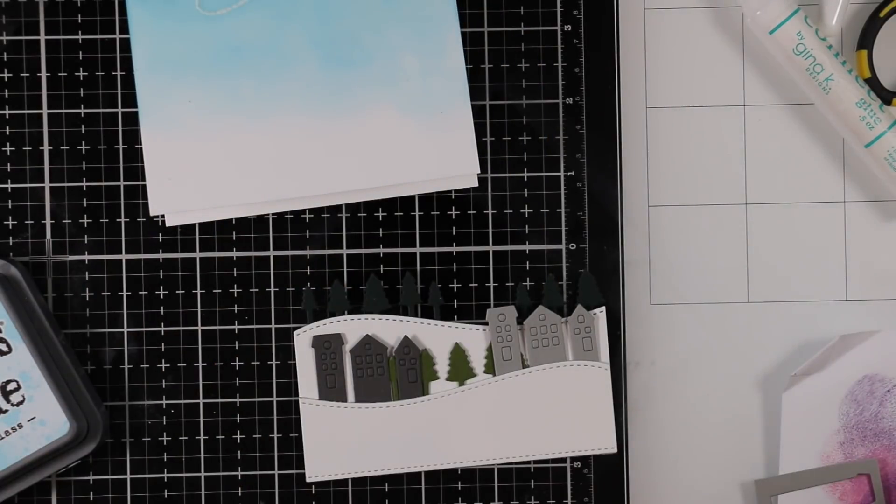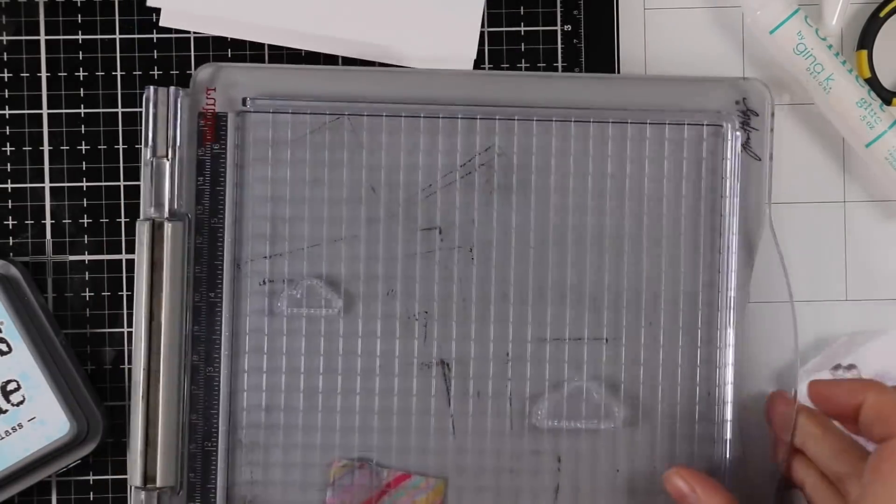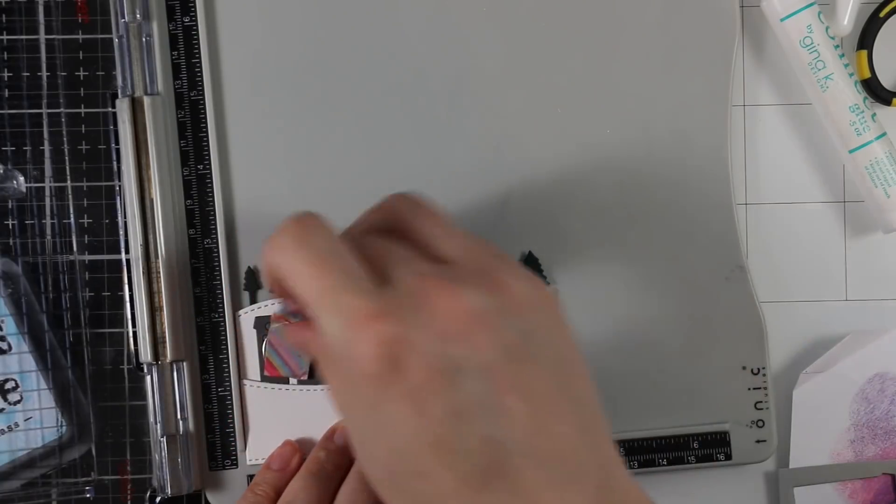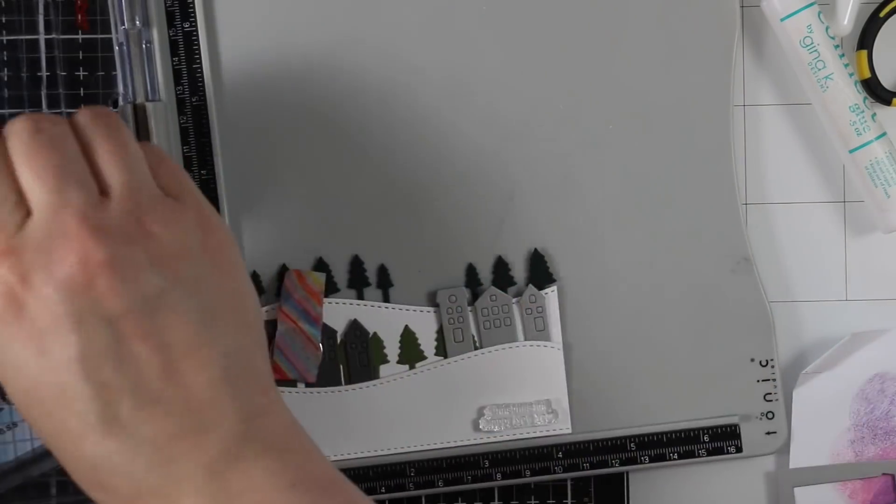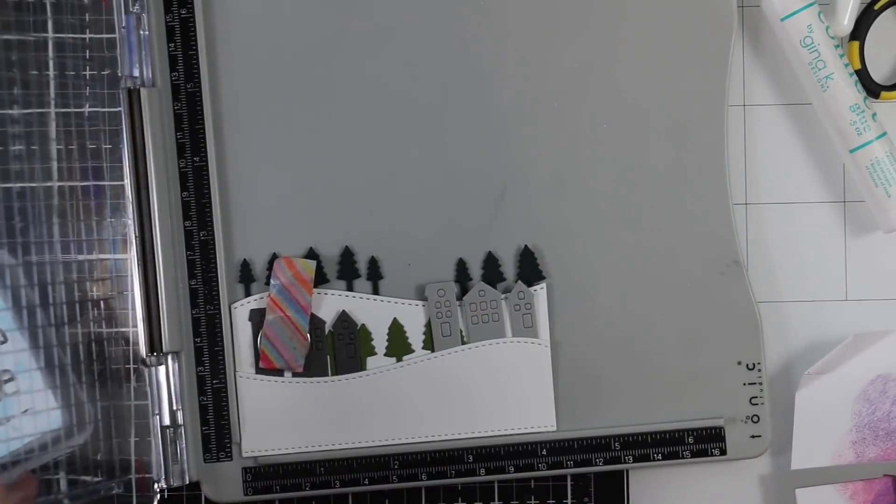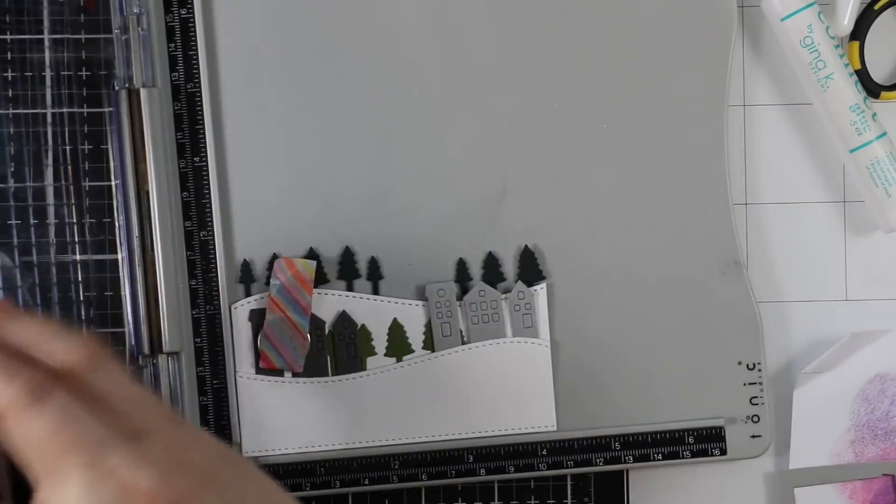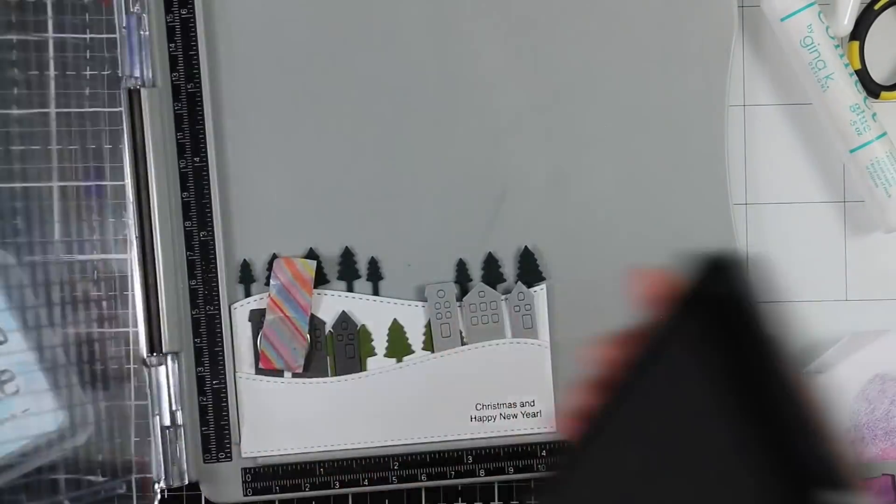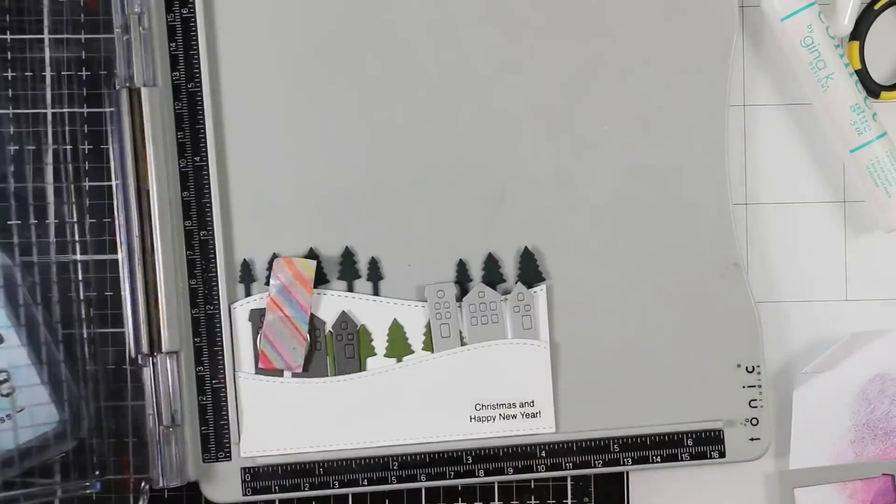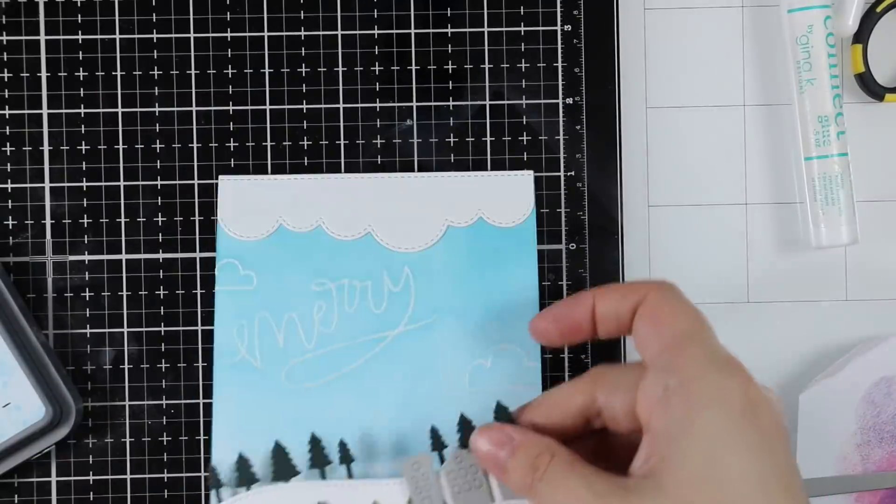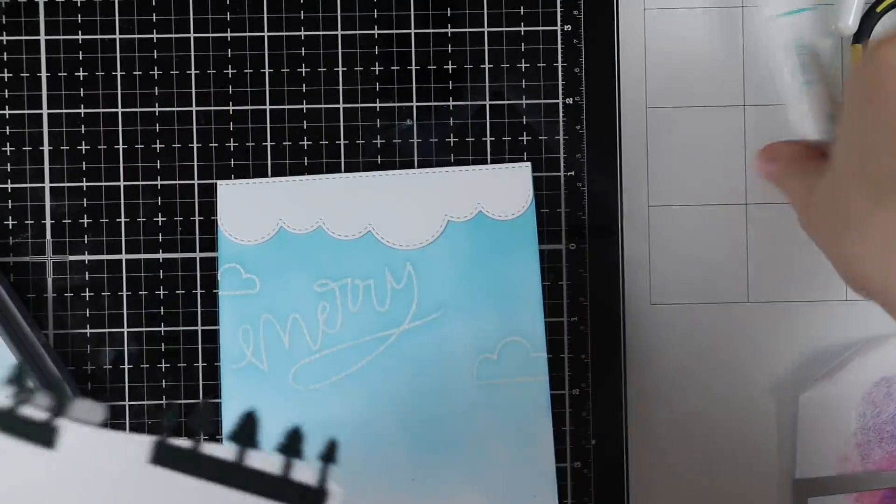Before I adhere this piece to my card front, I wanted to stamp the sentiment onto it first because once it's adhered to my card front it's going to make it a lot thicker. I knew I wanted to use my stamp positioner because it's a very tiny sentiment. It's a brand new stamp so it needs to be inked up more than once. I used my stamp positioner and inked it up twice so the sky writing says merry and then Christmas and happy new year.